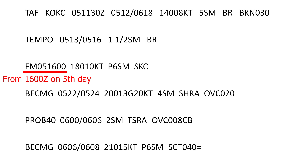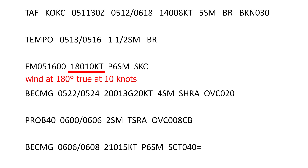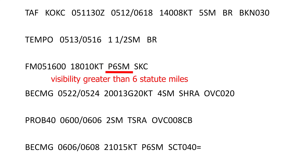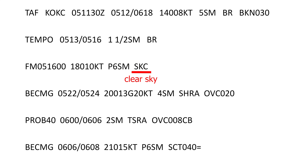So this block would read: from 16:00 Zulu on the 5th, wind at 180 degrees at 10 knots. The letter P in front of the visibility value indicates greater than the highest reportable value. So this would read: visibility greater than 6 statute miles with clear sky.